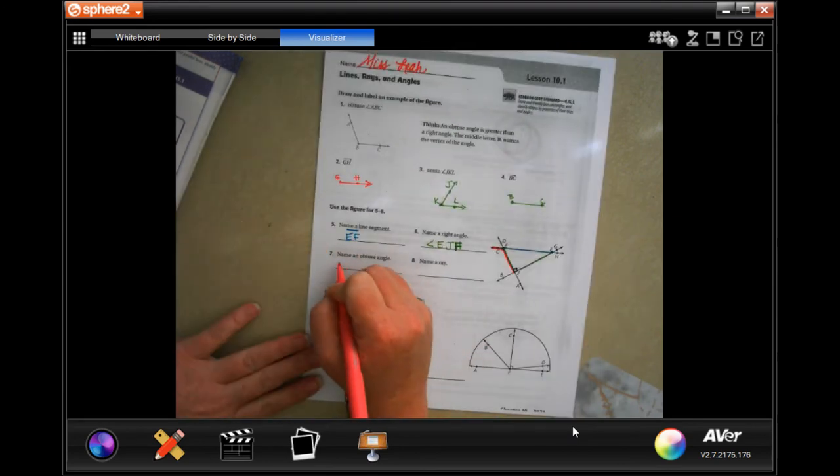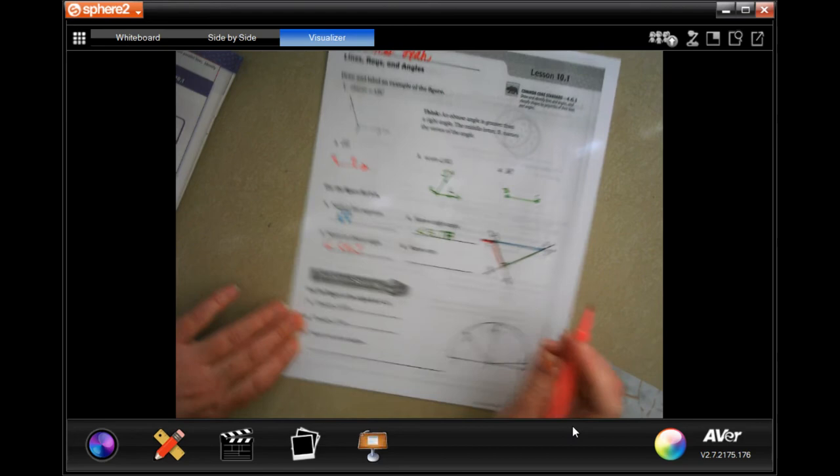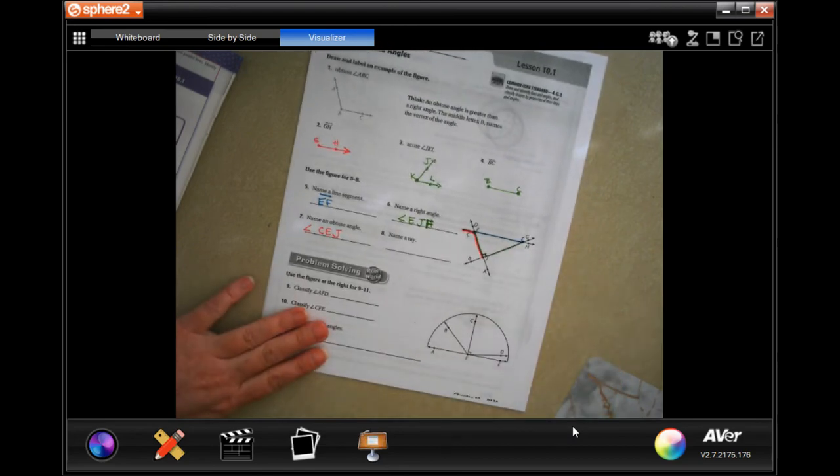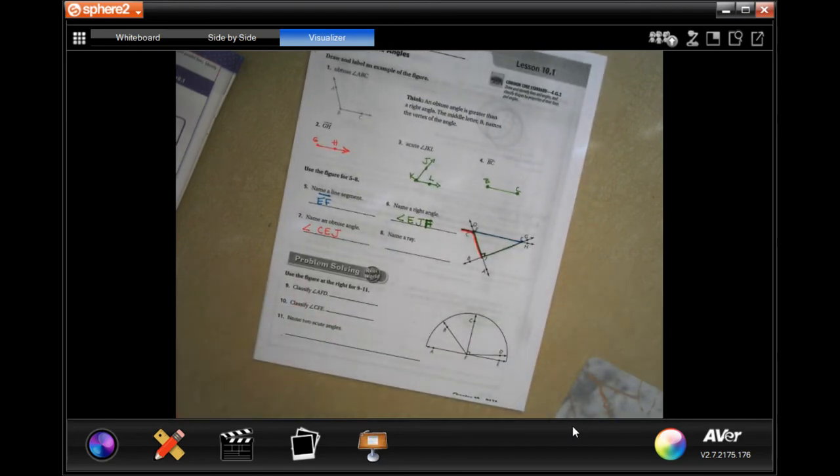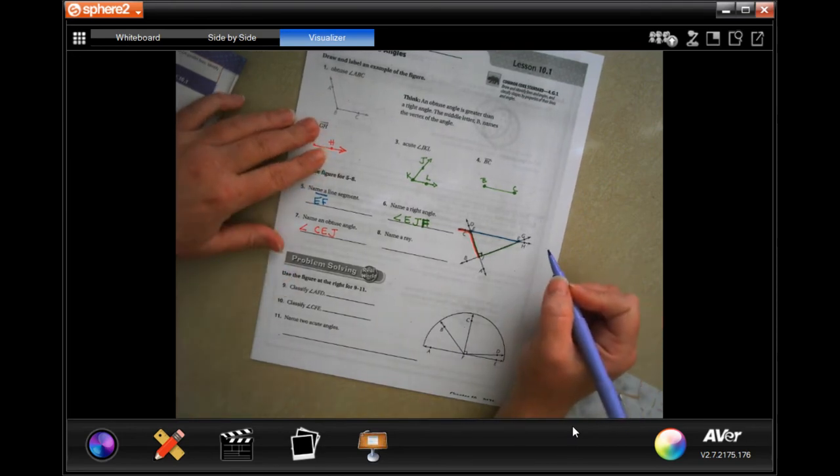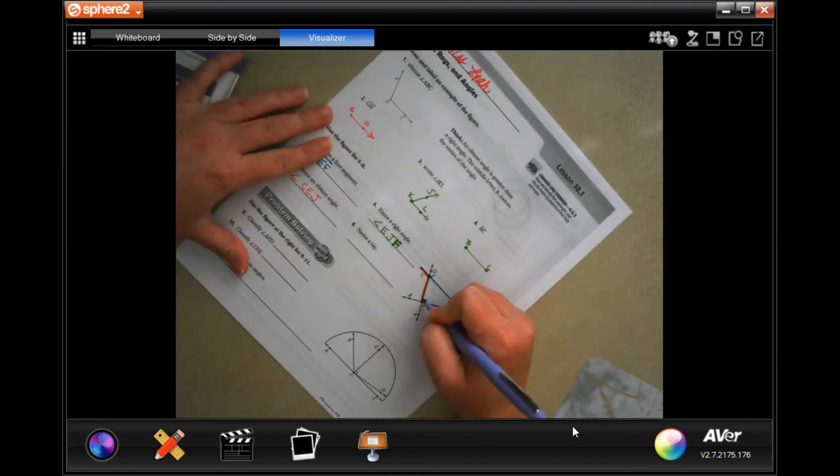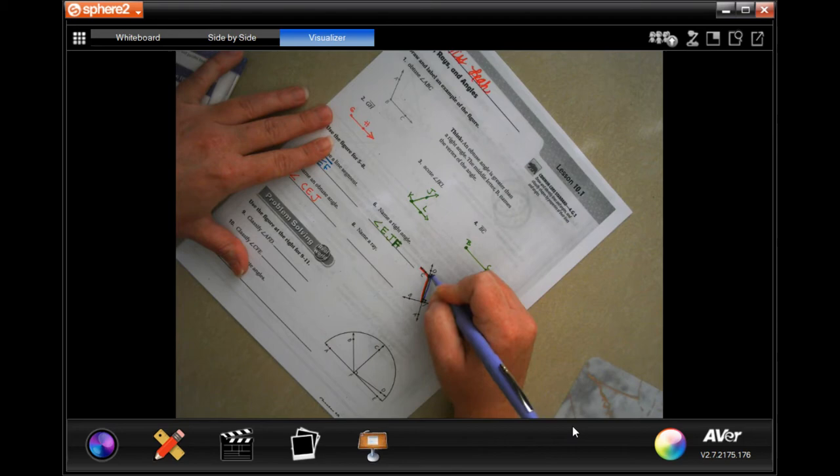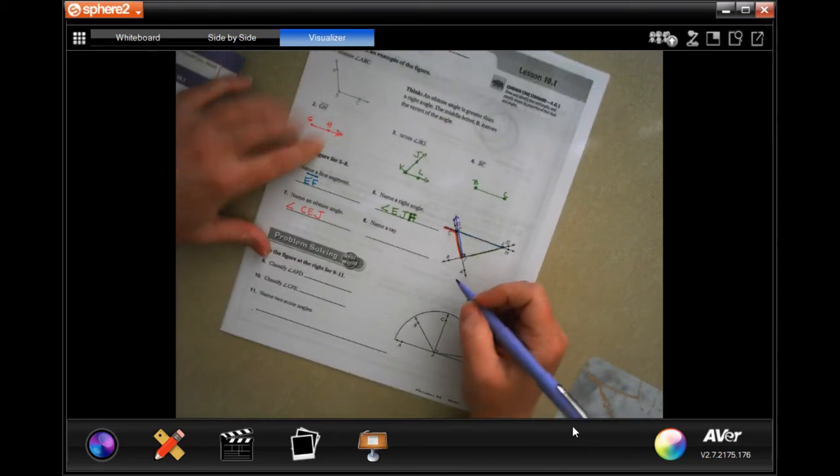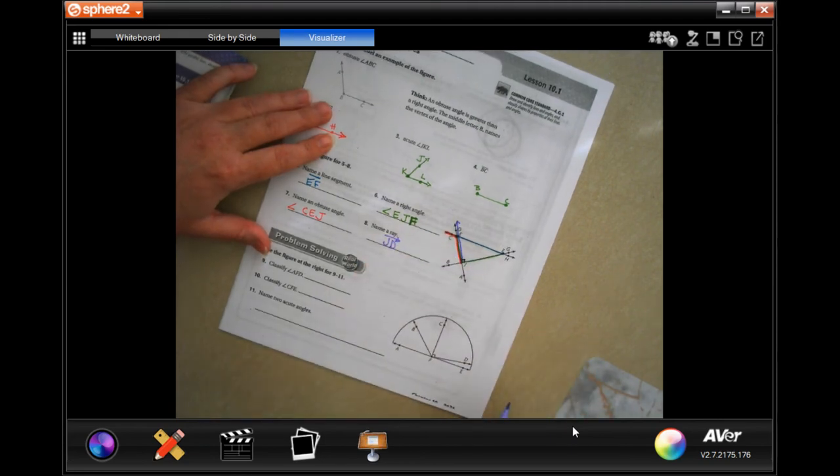We're going to have angle B, E, J. Now we're going to name a ray. Here's one right here, goes from J through D. So we're going to go J, D with a line over it with an arrow.